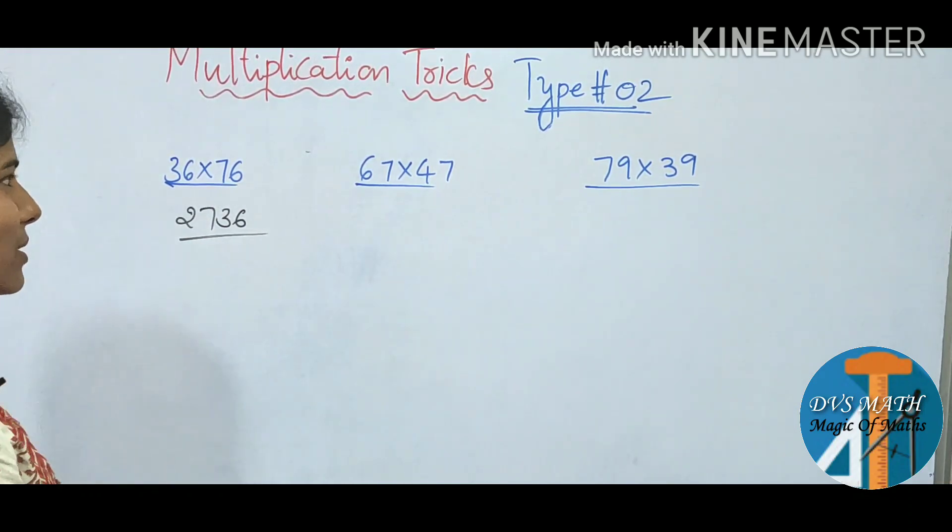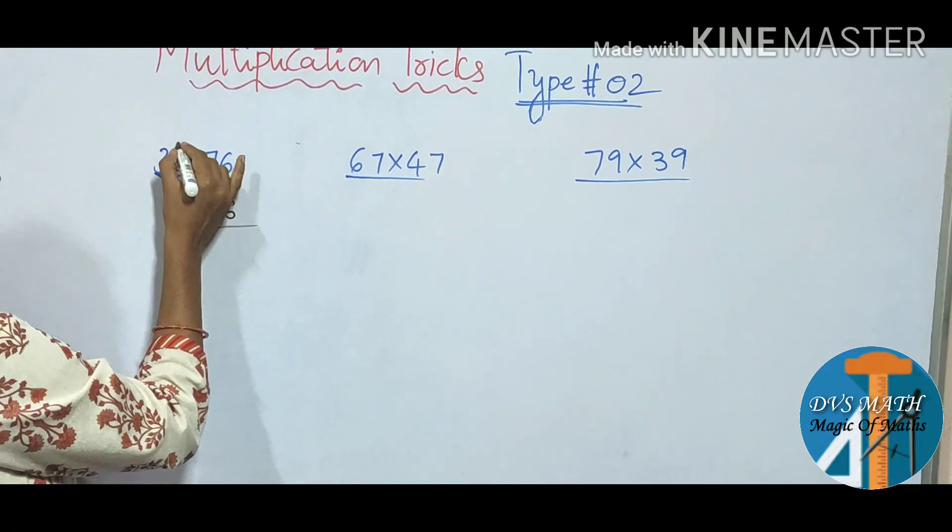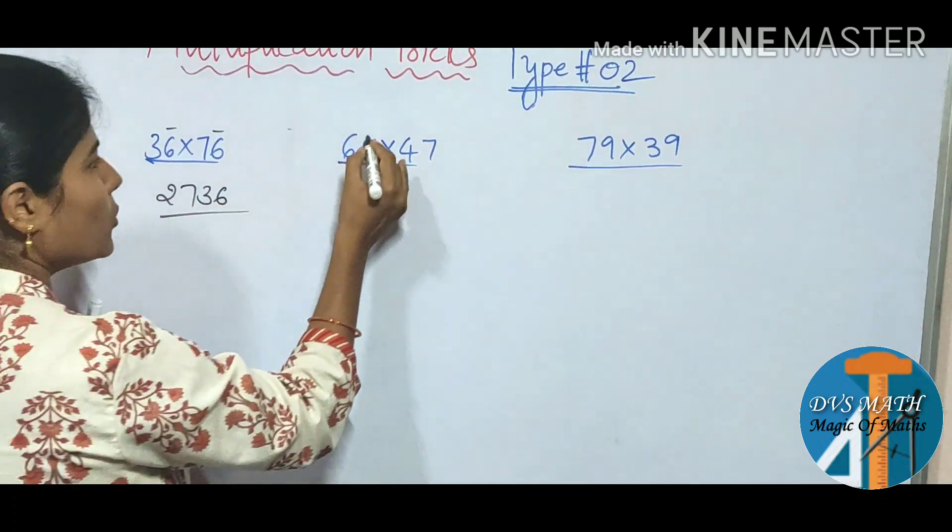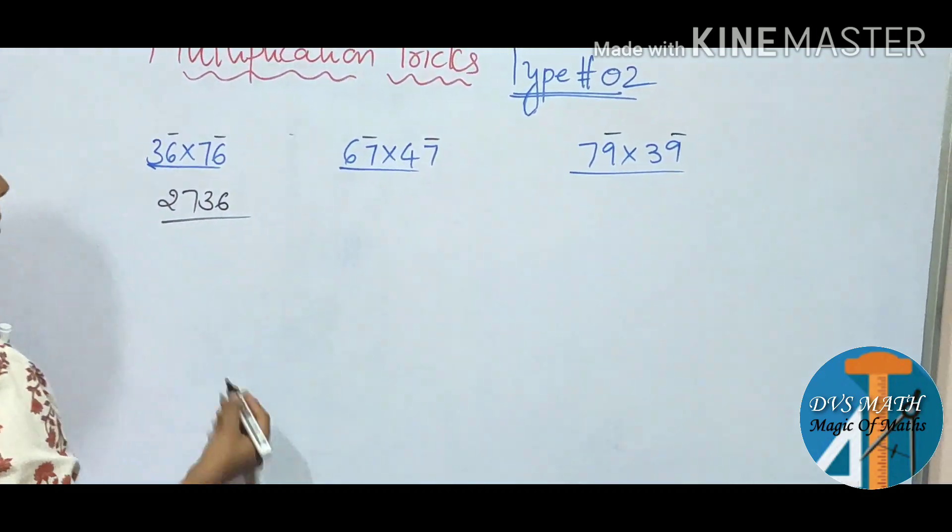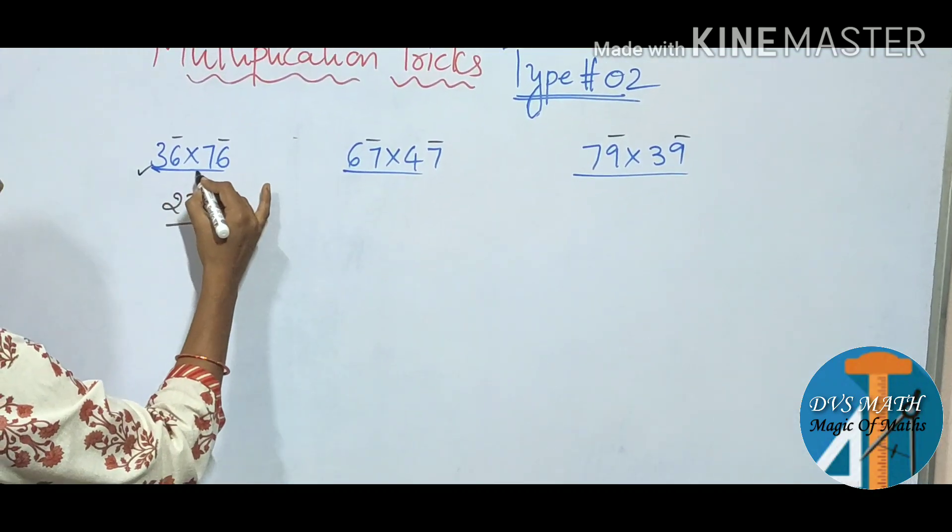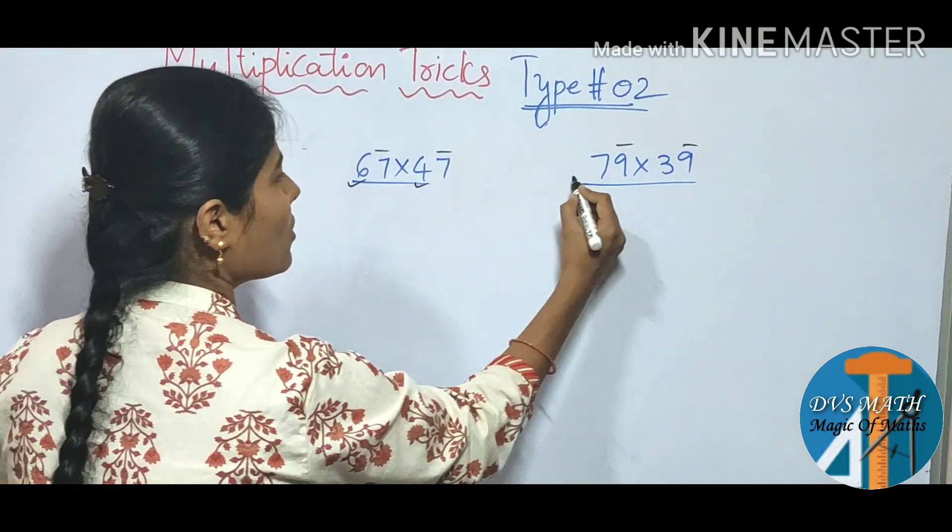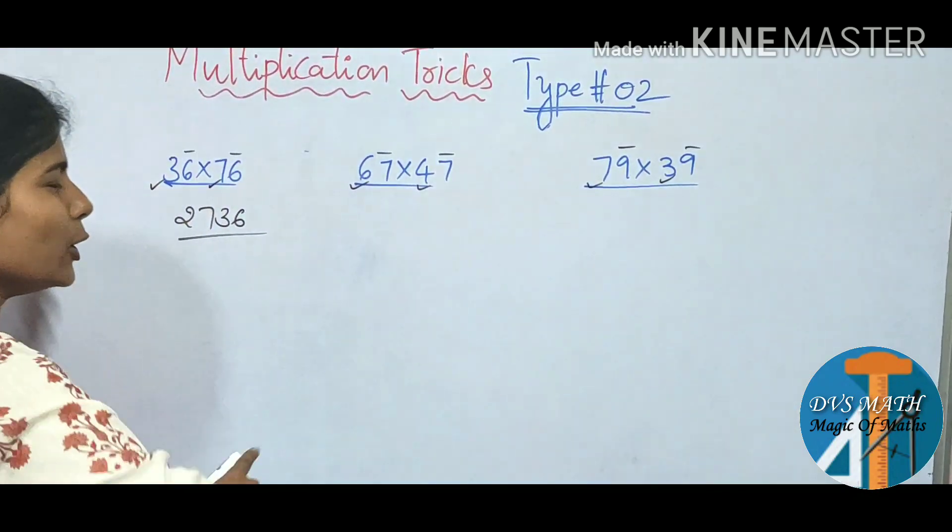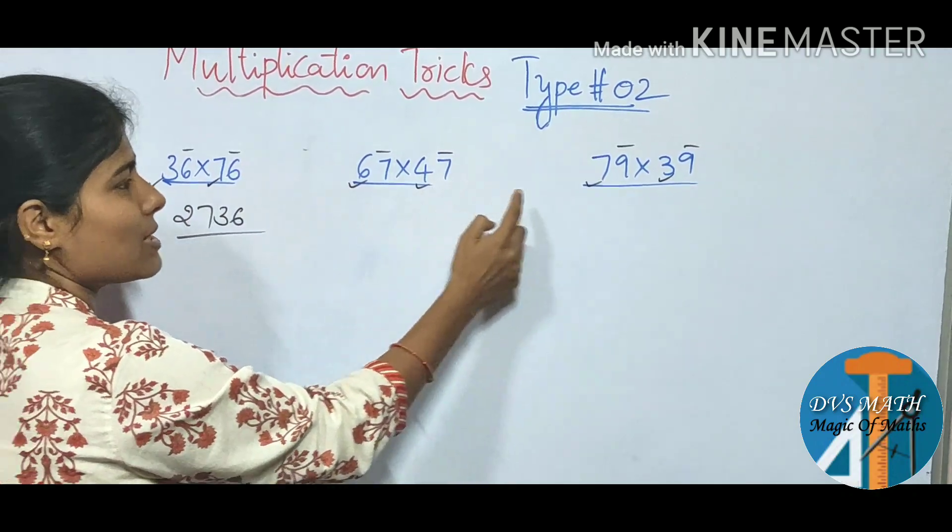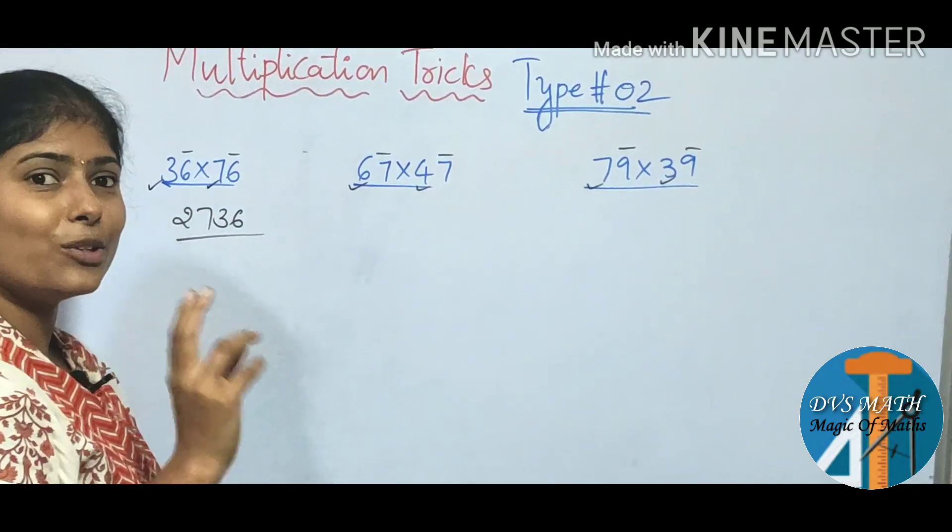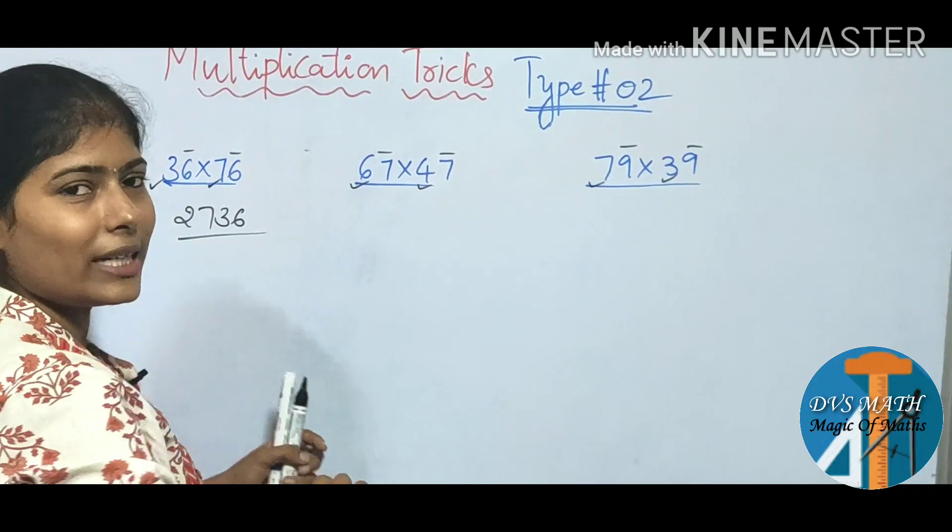Observe numbers. So here in last, 6 unit place, 7 9. So here in all the numbers, 3 7 6 4 7 3, unit place numbers same same, 6 6 7 7 9 9. And this is the rule type 2.